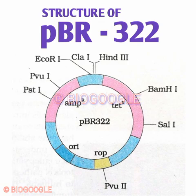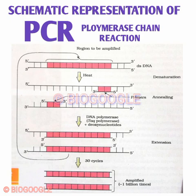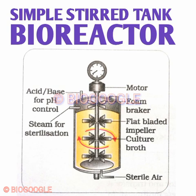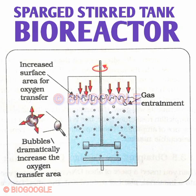Next is the schematic representation of PCR — polymerase chain reaction. Show all three stages: denaturation, annealing, and extension. Next is the simple stirred tank bioreactor — show all labelings; a minimum of six labelings is needed if the diagram is asked for three marks. The sparged stirred tank bioreactor may also be asked for three marks — show all those labelings clearly.